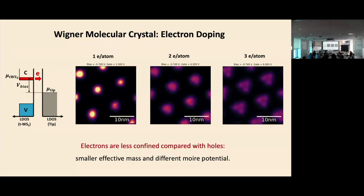On the shape of the potential: electrons and holes localize at different parts of the Moiré unit cell. For the electron side, the potential is definitely less deep. For the 60° twisted bilayer samples, both the electron side and hole side have a triangular lattice. For near-zero twist angle, homo-bilayers tend to give hexagonal lattices, but near 60°, you usually get triangular lattices.